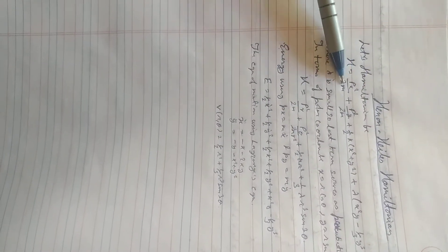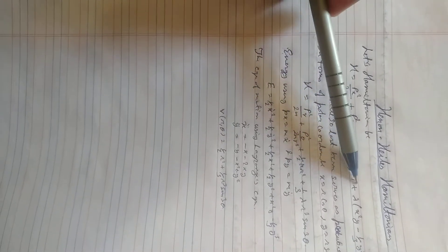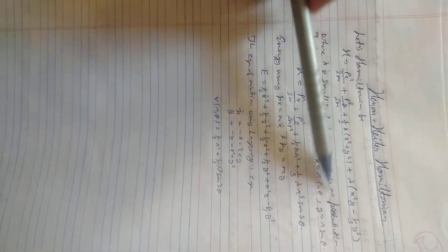Let's Hamilton be H equals Px square by 2m plus Py square by 2m plus half kx square plus y square plus lambda Hx square y minus 1 by 3y cube, where lambda is small so the last term serves as a perturbation term.